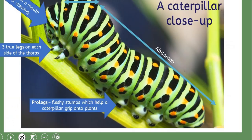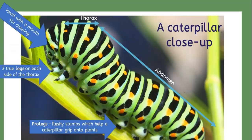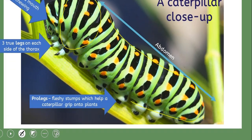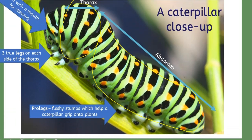Here's a close-up of the caterpillar. You can see the thorax up top and the abdomen below.